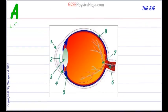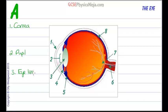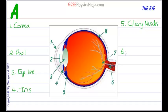Number 1 is the cornea. Number 2 is the pupil. Number 3 is the eye lens. Number 4 is the iris. Number 5 is the ciliary muscles. Number 6 is the optic nerve. Number 7 is the blind spot. And number 8 is the retina.